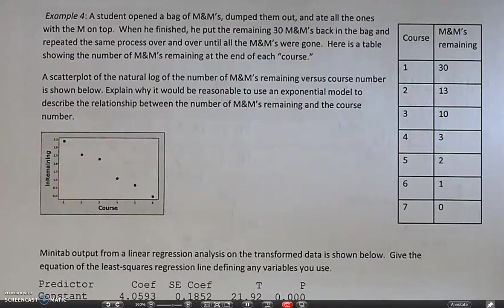All right. Let's look at the next example. A student opened a bag of M&Ms, dumped them out, and ate all the ones with the M on top. When he finished, he put the remaining 30 M&Ms back in the bag and repeated the same process over and over until all of the M&Ms were gone. Here's a table showing the number of M&Ms remaining at the end of each course. A scatter plot of the natural log of the number of M&Ms remaining versus the course number is shown below. Explaining why it would be reasonable to use an exponential model to describe the relationship between the number of M&Ms remaining and the course number.